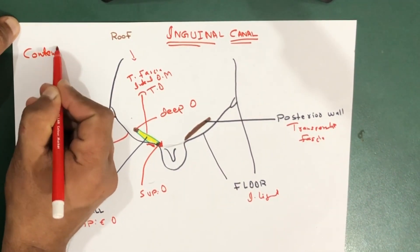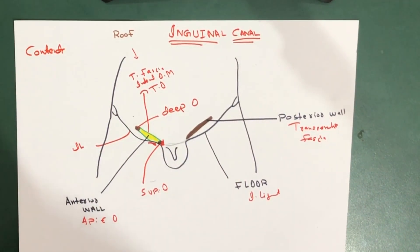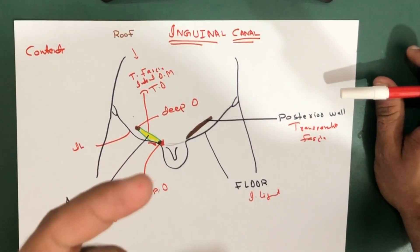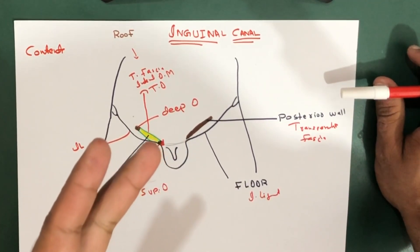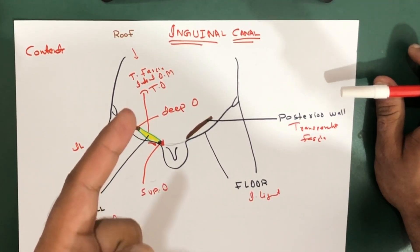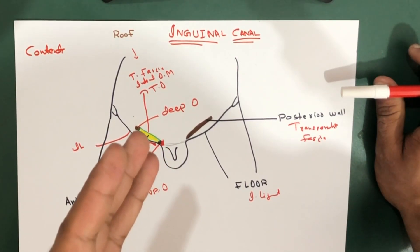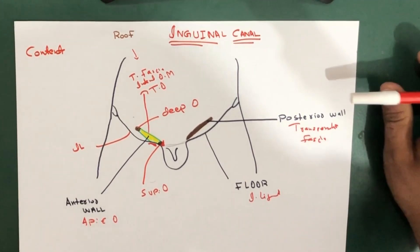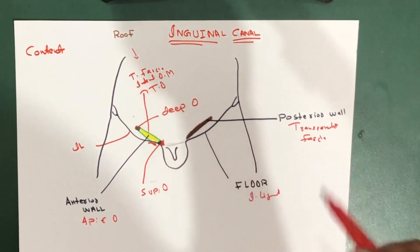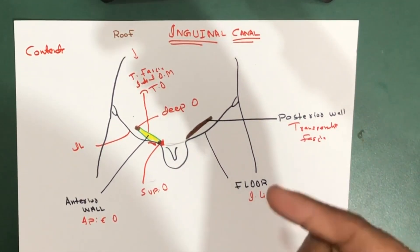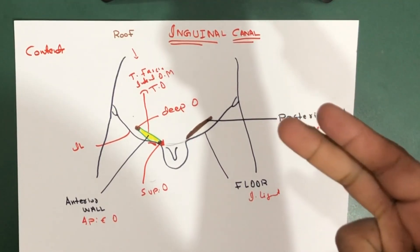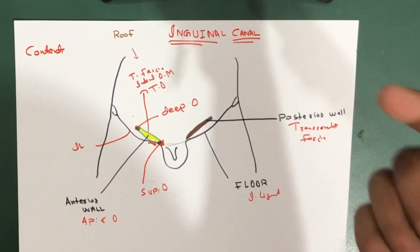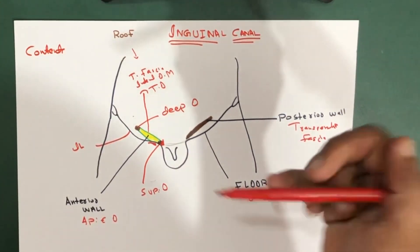Now for the contents: there are four main contents in the inguinal canal. Number one is the spermatic cord in males. Number two is the round ligament in females. Number three is the ilioinguinal nerve, present in both males and females. Number four is the genital branch of the genitofemoral nerve.